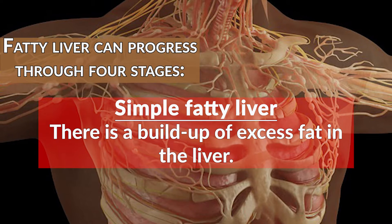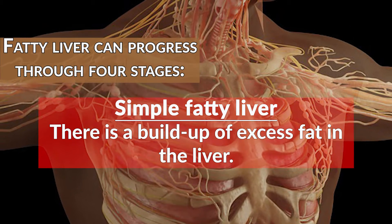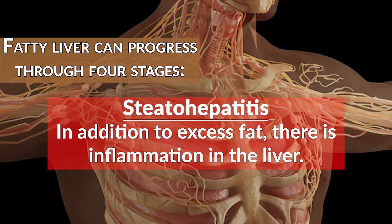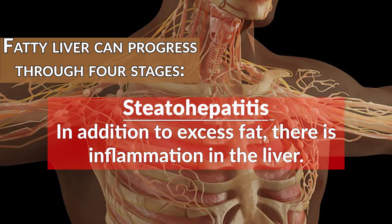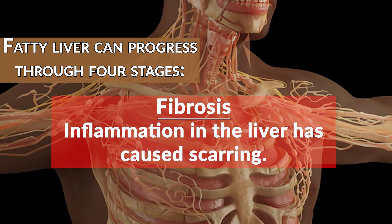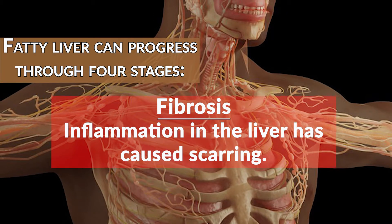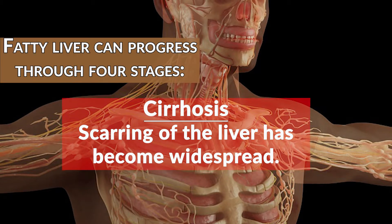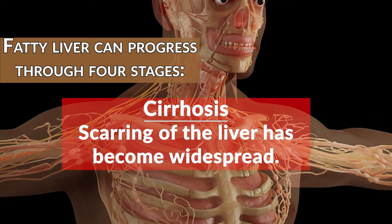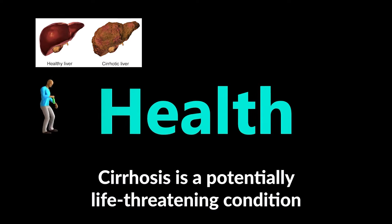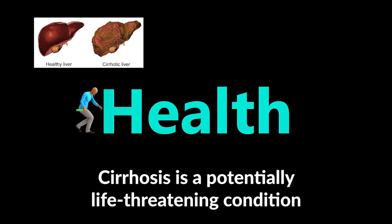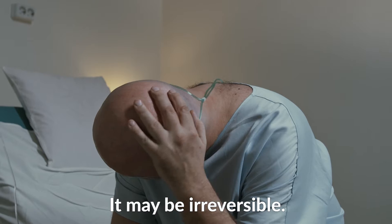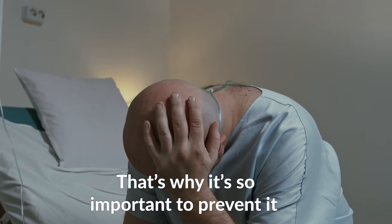Fatty liver can progress through four stages. Simple fatty liver: there is a buildup of excess fat in the liver. Steatohepatitis: in addition to excess fat, there is inflammation in the liver. Fibrosis: inflammation in the liver has caused scarring. Cirrhosis: scarring of the liver has become widespread.